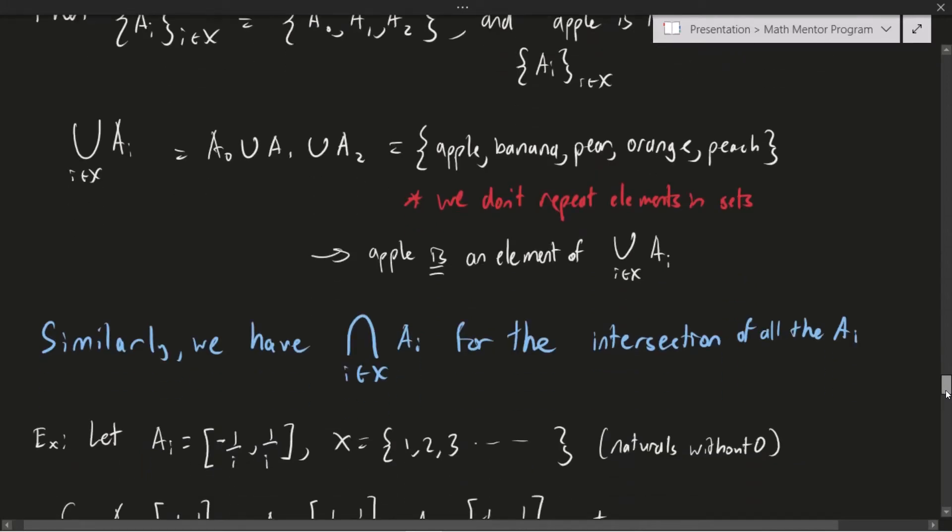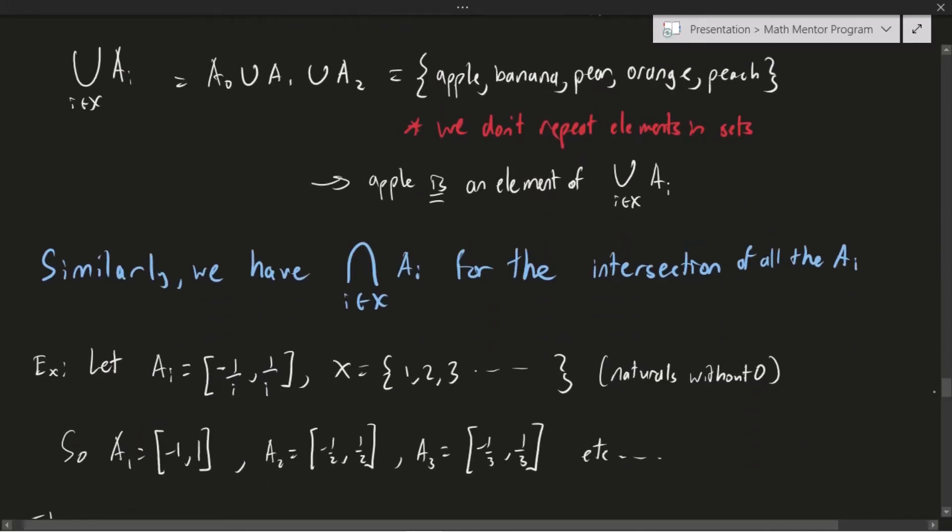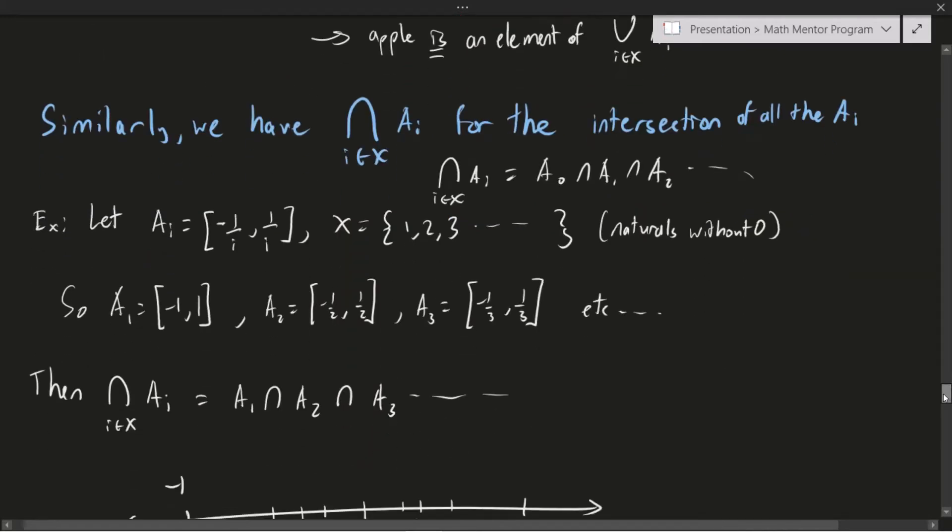In a very similar and analogous way, we will define the general intersection of sets. And so you can think about this again, as just the intersection of all the Ai. So we would write like A0, intersect A1, intersect A2, and so on. For a more concrete example, I have a kind of neat example here that actually has its roots in topology. So in my example, I'm going to define the Ai by a formula. It's going to be the closed interval from negative one over i to one over i.